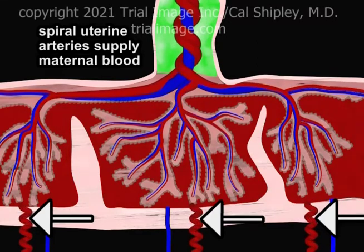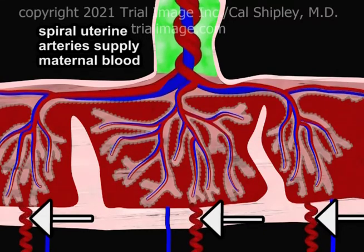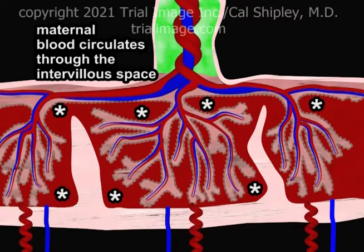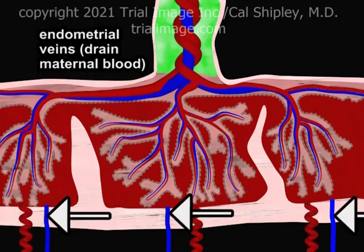Maternal uterine arteries, known as spiral arteries, supply blood to the placenta by penetrating the decidual layer. The maternal blood circulates through the intervillous space and then returns to the uterus via the endometrial vein.